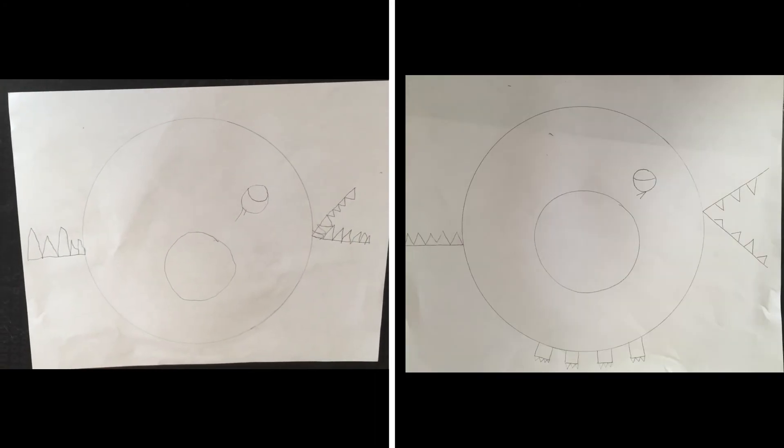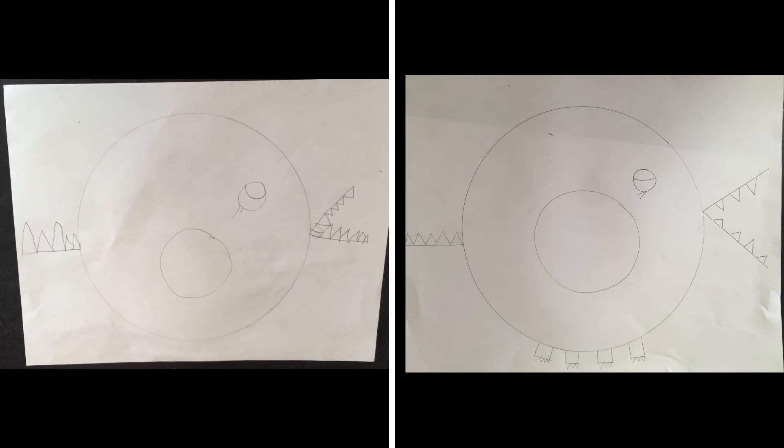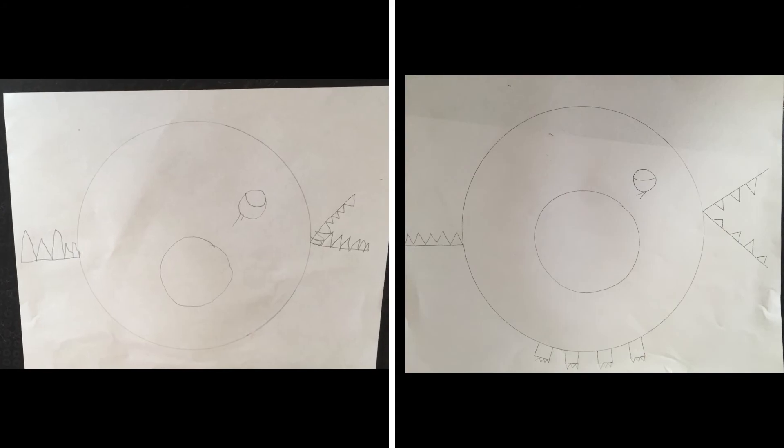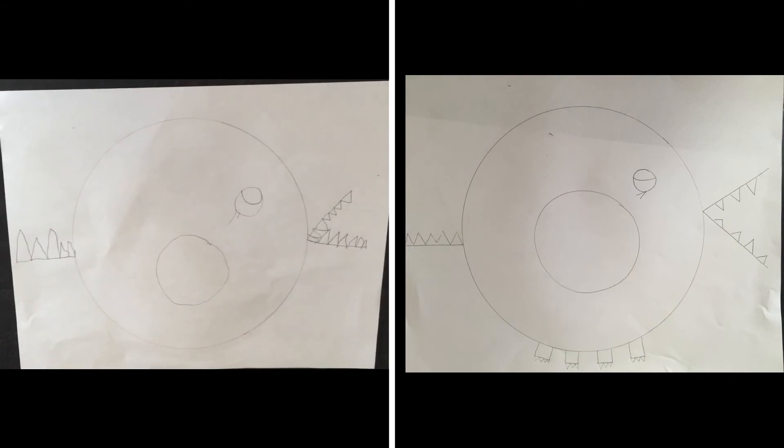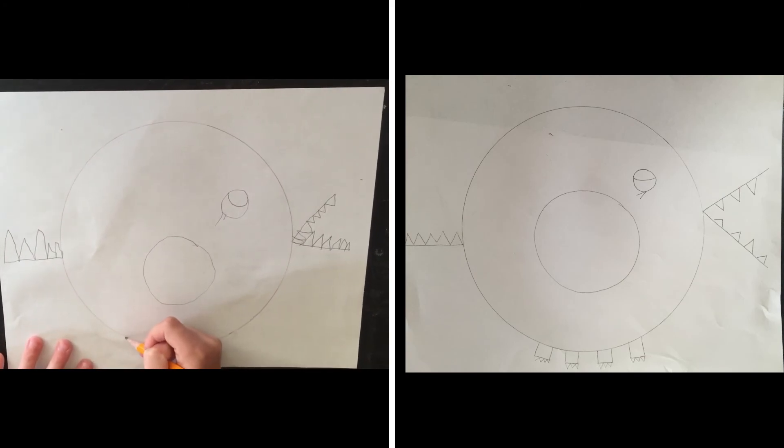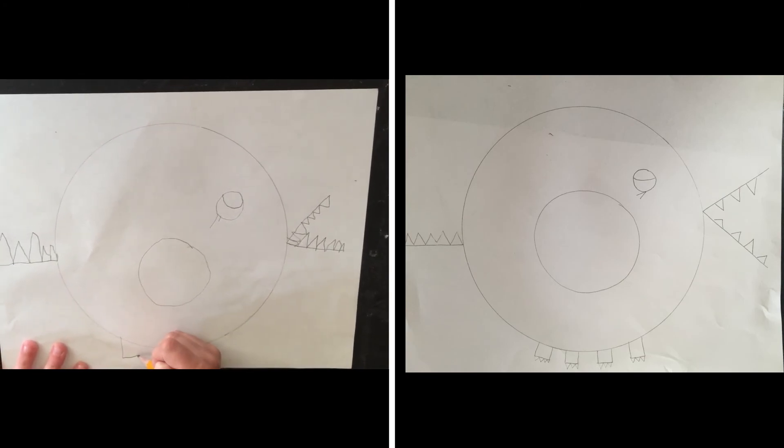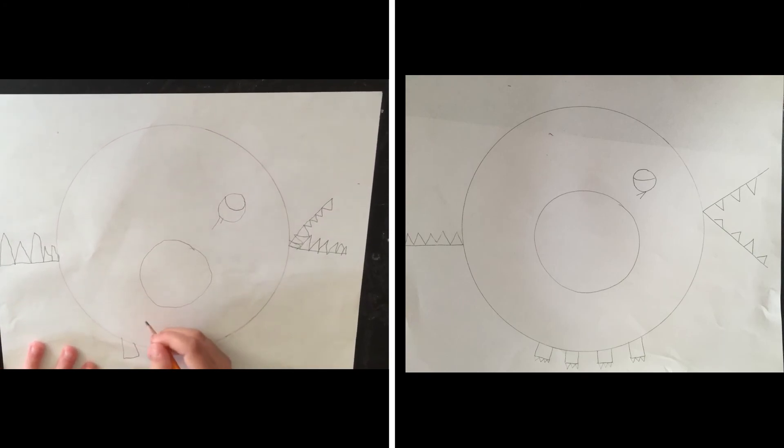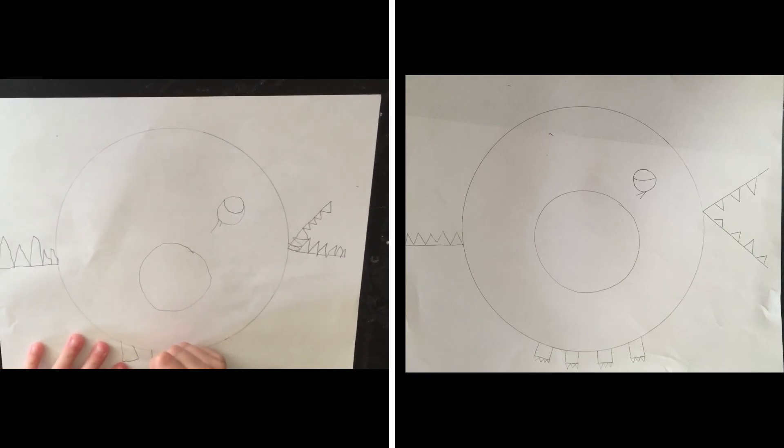Alright, the last thing for our piano alligator is some feet. How many feet does an alligator have? Four! Four! So we're gonna do four rectangles at the bottom—you choose—coming right off of the circle. They're almost rectangles.